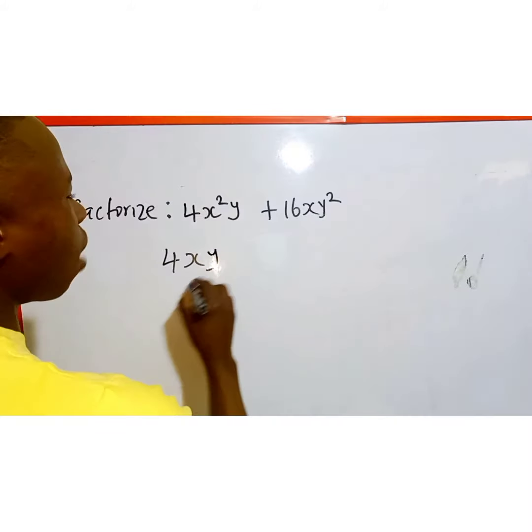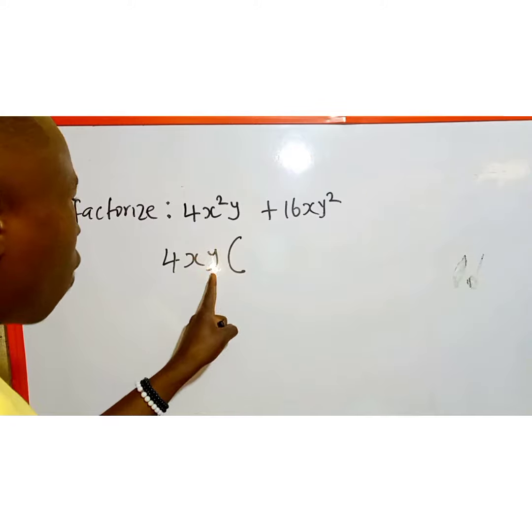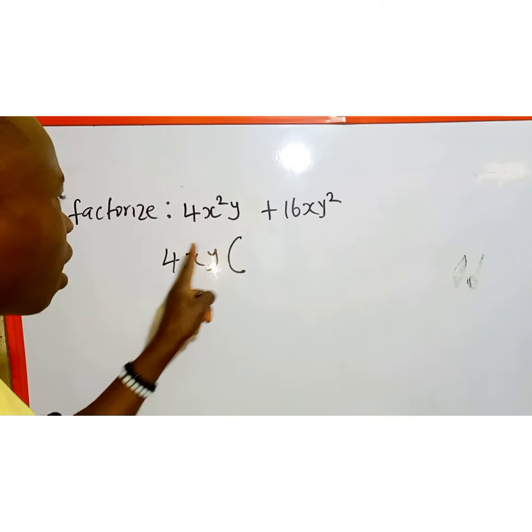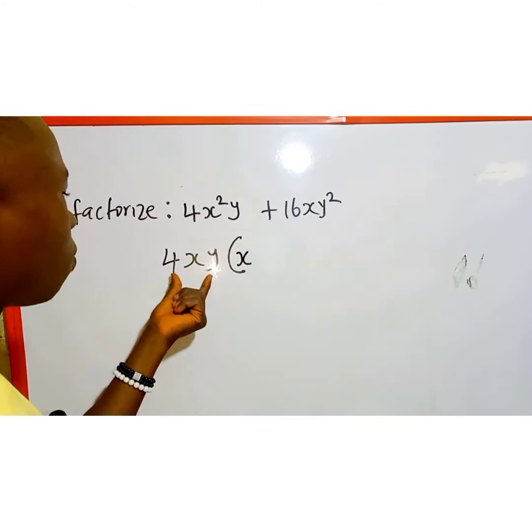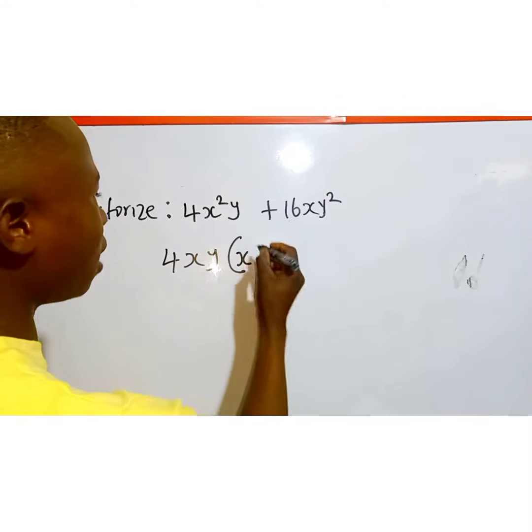Then we open bracket. This first expression we have 4xy, and this place x is squared and this place x is to the power of one, so we are going to bring out our remaining x so that if you multiply this with x it will give me 4x²y.